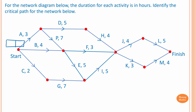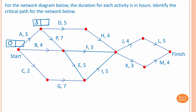The earliest starting time for activities A, B, and C is zero. To complete activity A we need three hours, so after three hours you can start on activity D or P. Three plus zero is three, so the earliest starting time for D and P is three.